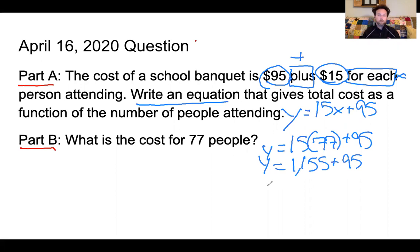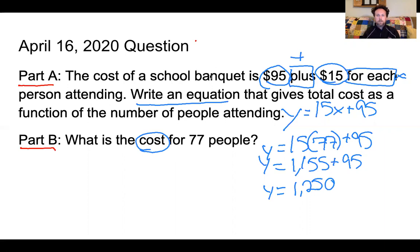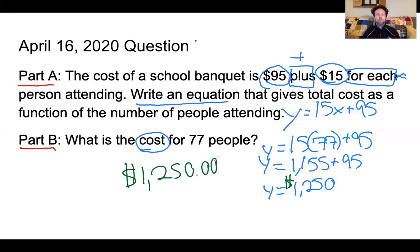15 times 77 gives me 1,155, plus 95 equals 1,250. Going back to the question — what is the cost for 77 people? Since this is taking place in the United States, my y is $1,250. So in order to rent out the space for 77 people, it's going to cost $1,250.